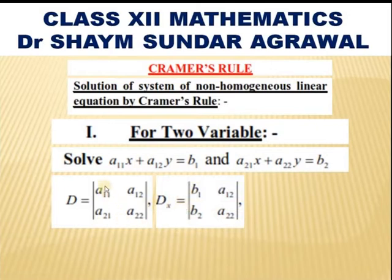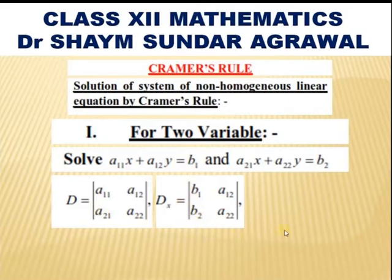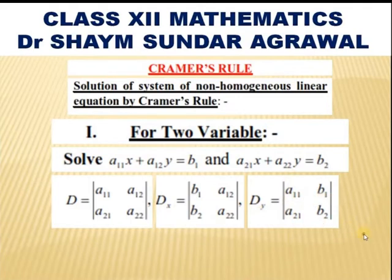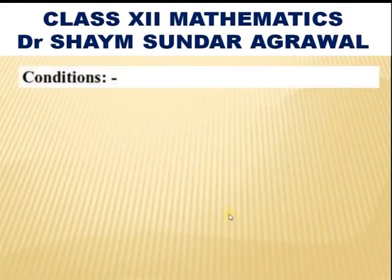Then we have to find Dx — this is a representation where the coefficients of x are replaced by the constants b₁ and b₂. So Dx = |b₁ a₁₂ / b₂ a₂₂|. Similarly, Dy is the determinant where the coefficients of y are replaced by the constants b₁ and b₂, so Dy = |a₁₁ b₁ / a₂₁ b₂|.